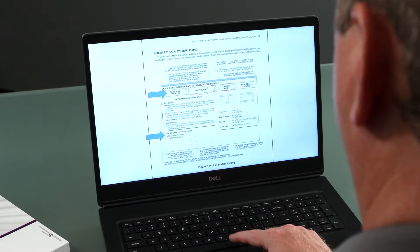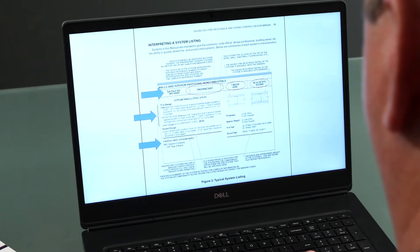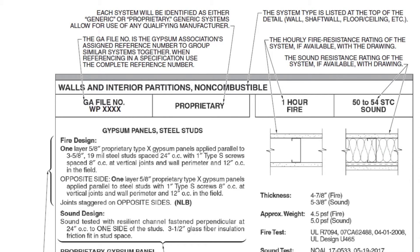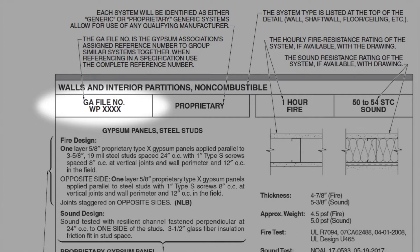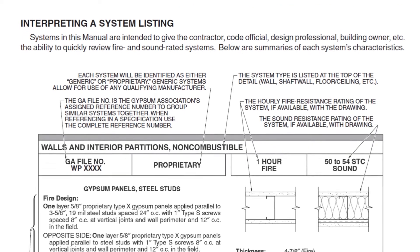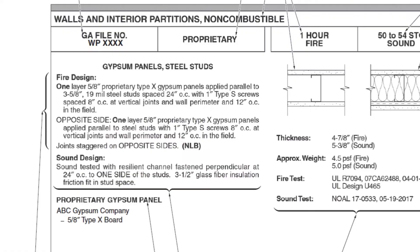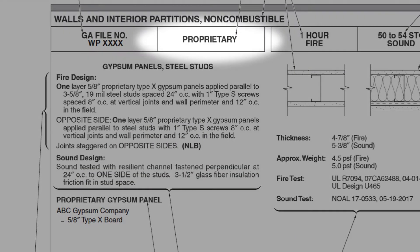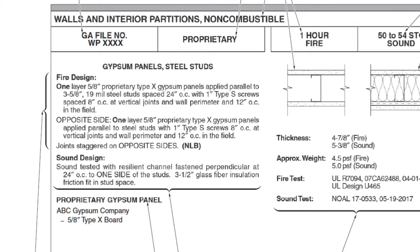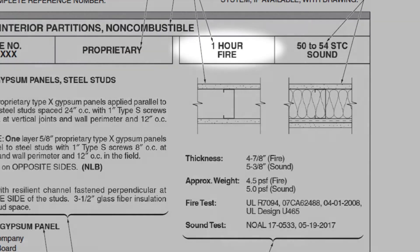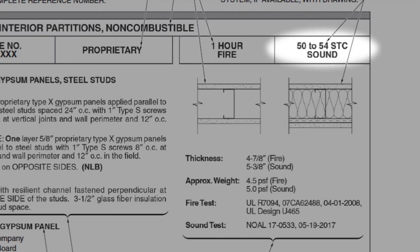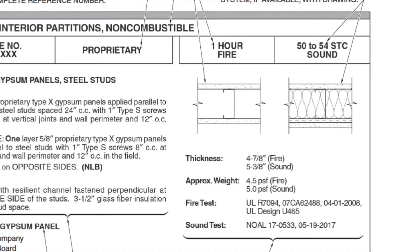A typical system listing is included on page 15. Each system has been assigned a reference number — the GA file number. Remember to cite the full GA file number in specifications and on plans when making inquiries about specific systems. GA file numbers group similarly rated assemblies together to facilitate comparing systems of like ratings. Where the word 'proprietary' appears in system descriptions, one or more system components is considered proprietary, and each proprietary system shall be built using the components specified by the listed company. Fire resistance ratings and STCs are the result of tests conducted on systems composed of specific materials put together in a specific manner.